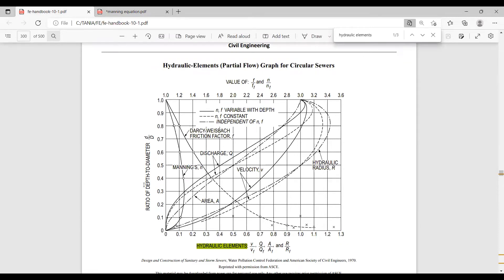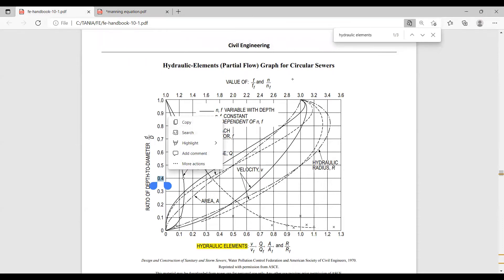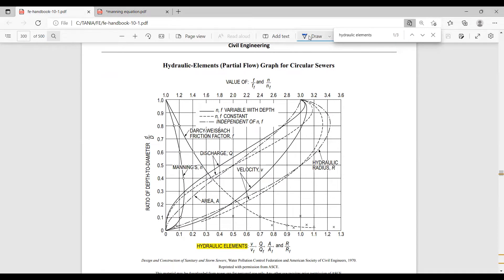We can just draw here a straight line, and then here we need the area of flow over area. Let's look for it. This is the curve and where it does intersect, here this line.